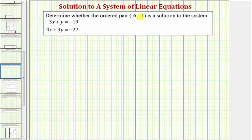If this ordered pair is a solution to the system, it must satisfy both equations. Therefore, to see if it is a solution, we'll substitute negative six for x and negative one for y in both equations and see if it satisfies both.